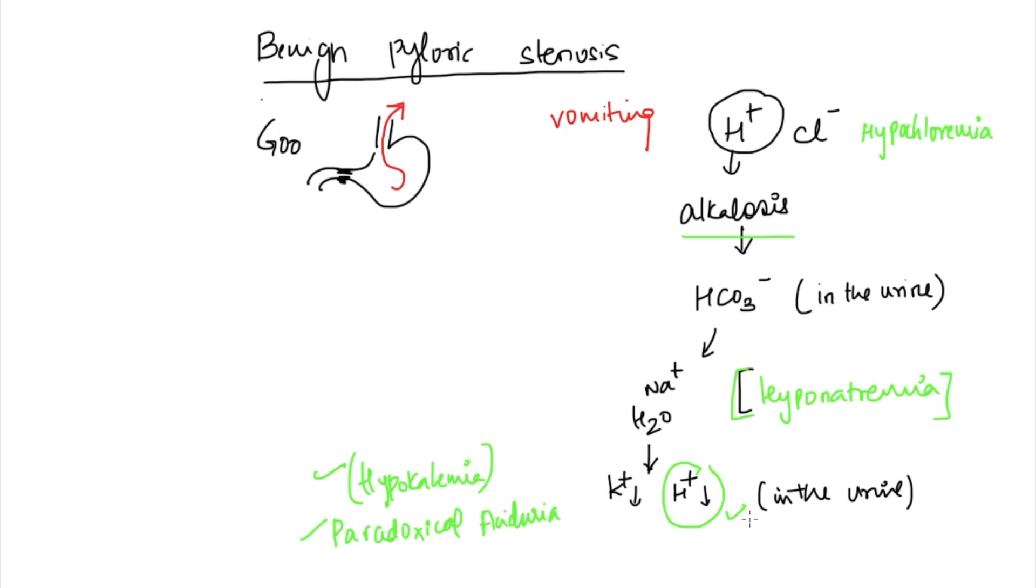Also, we got to add one more thing. What really happens is when the body is in this state of alkalosis, the ionized form of calcium will reduce. As a result, you will not really lose calcium, but there will be hypocalcemia because of reduced ionized calcium, so you can develop tetany.